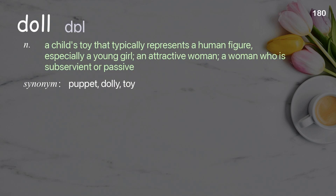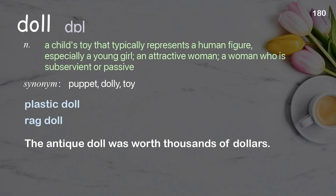Doll: a child's toy that typically represents a human figure, especially a young girl; an attractive woman; a woman who is subservient or passive. Examples: plastic doll; rag doll. The antique doll was worth thousands of dollars.